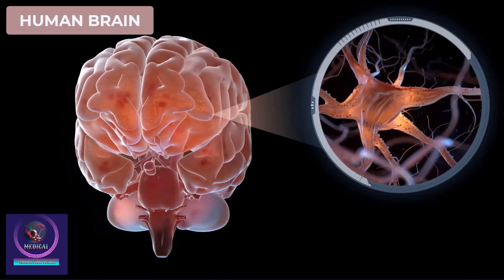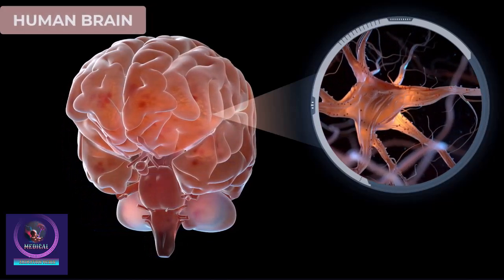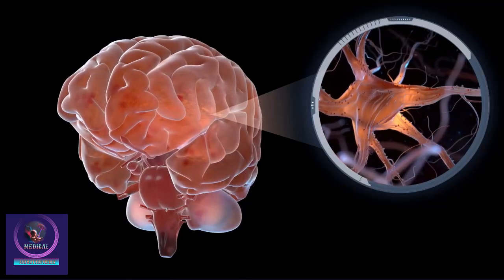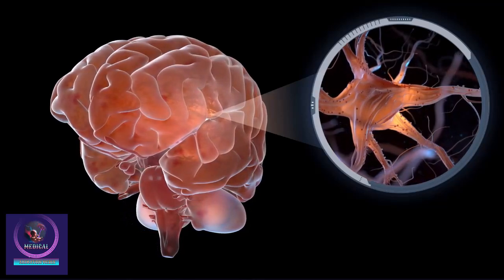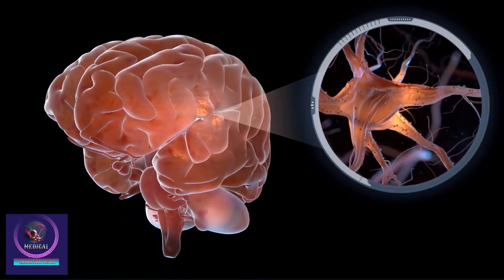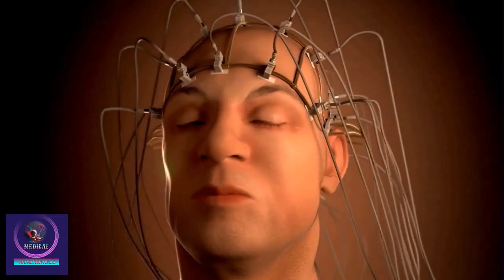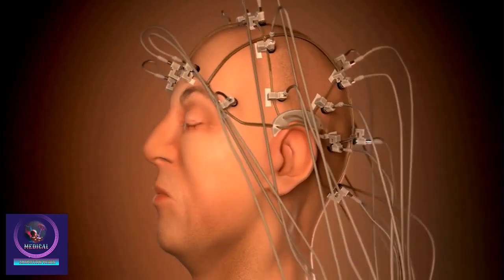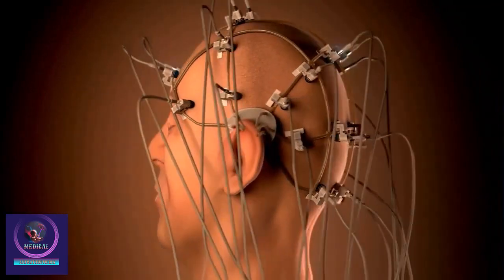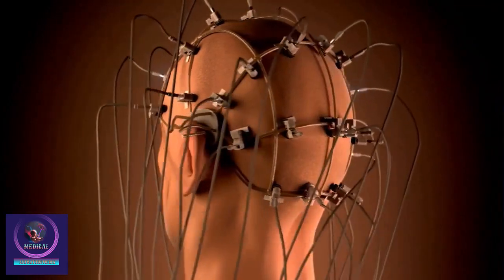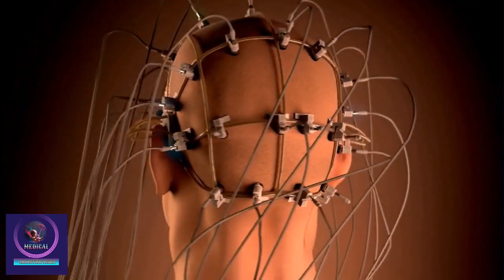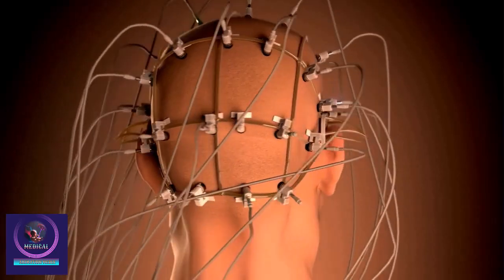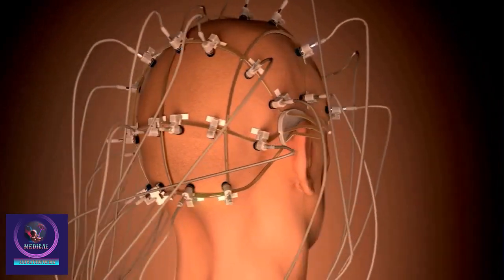The human brain is an amazing organ that contains billions of nerve cells. These cells are arranged into groups that are responsible for all the functions in your body, from movement, speech, and hearing to your mood, emotions, and memory.